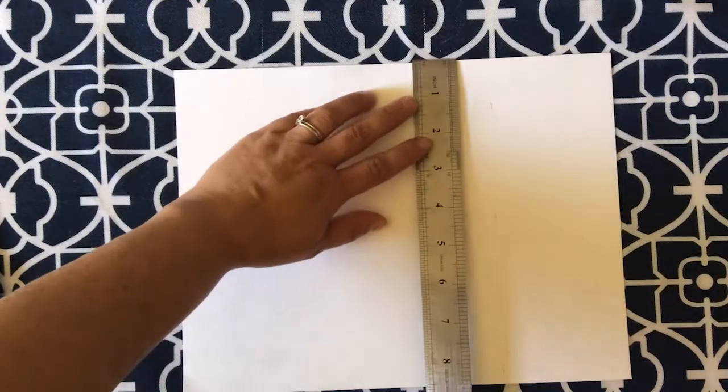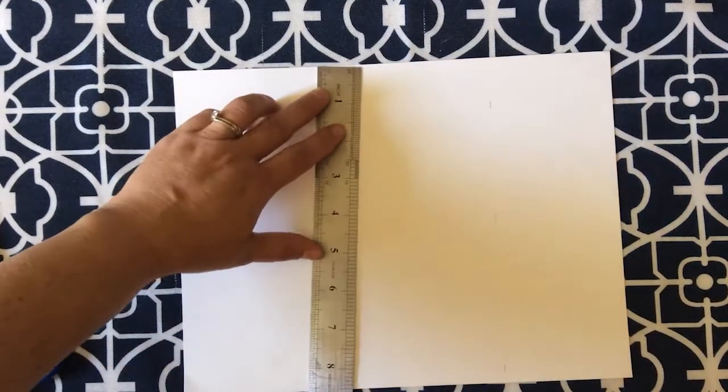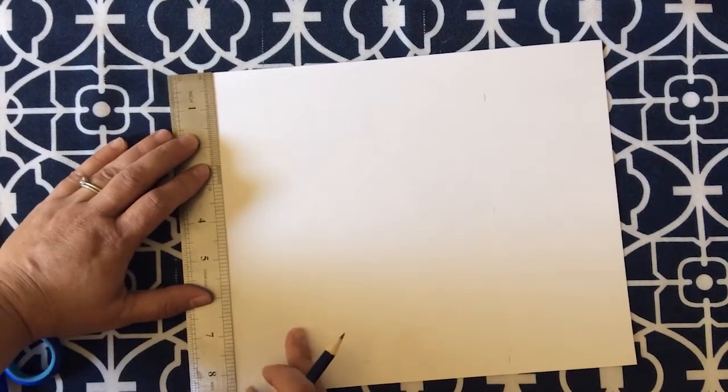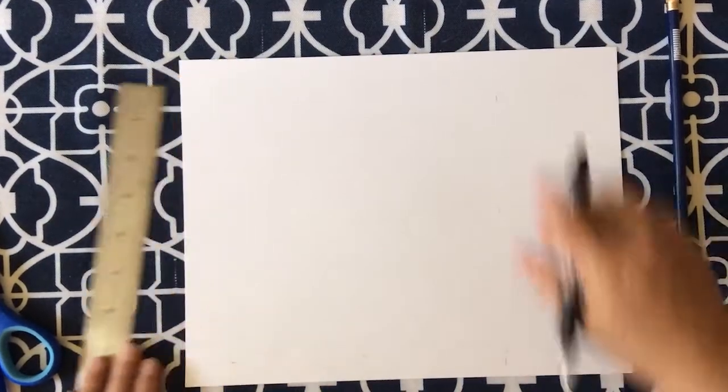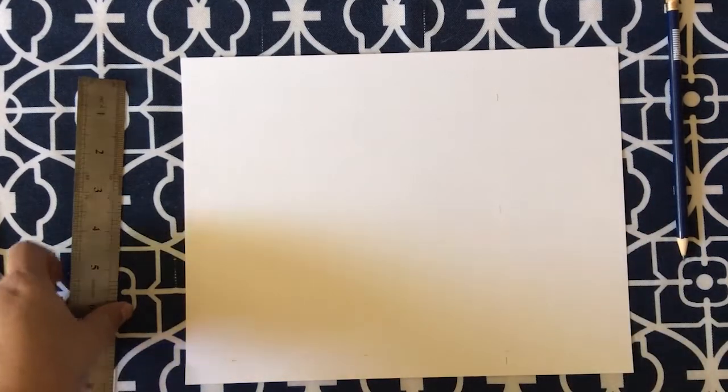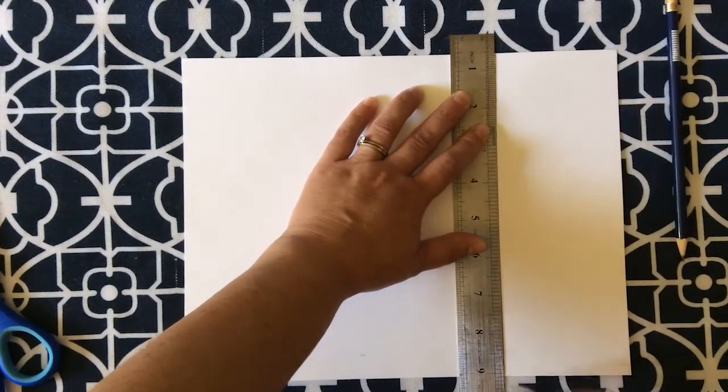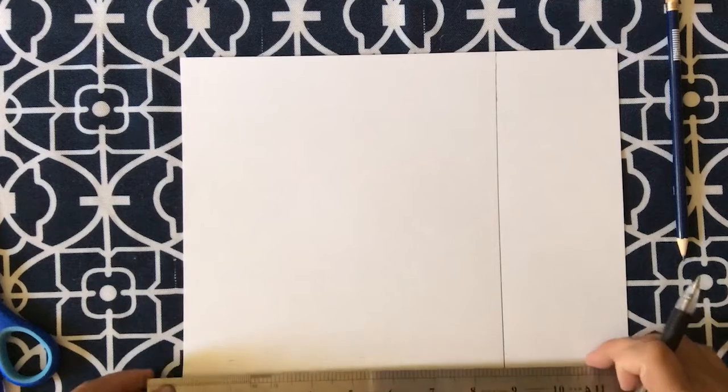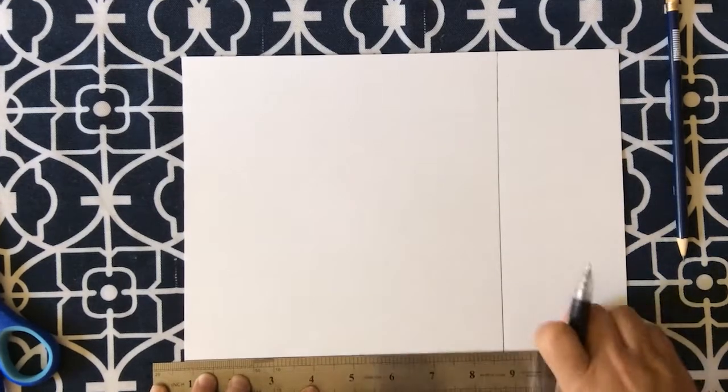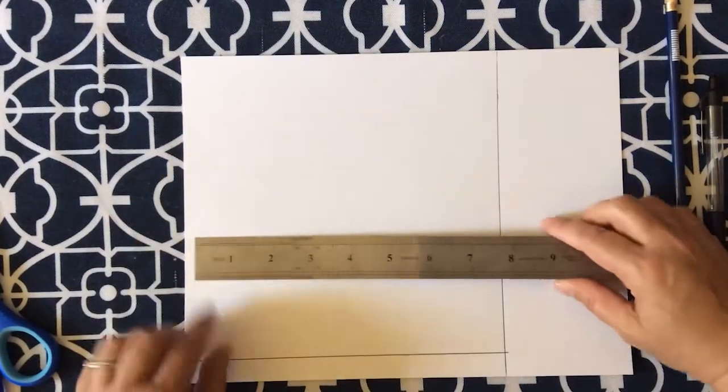We're also going to do that in this direction as well. So eight, eight, and we want to make our outside eight inch square a little darker. So we're going to use pen. So let's mark off this eight inch line and this eight inch line. Now we have a square that is eight by eight.